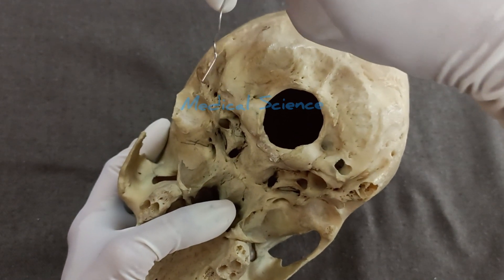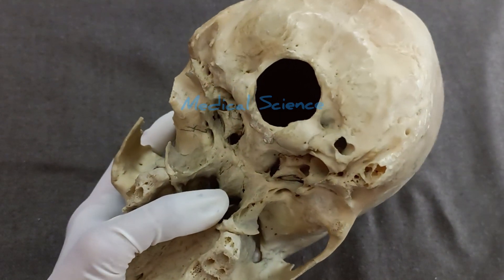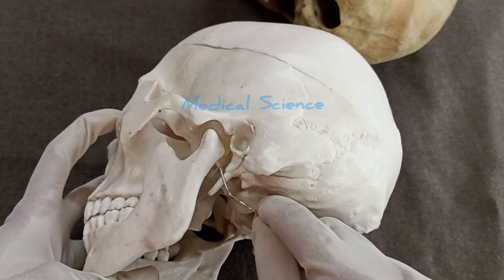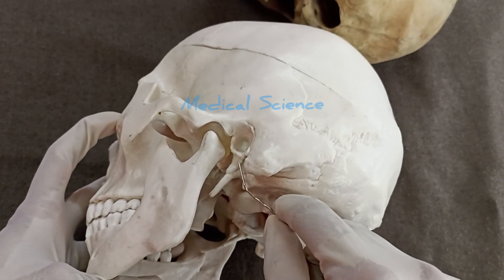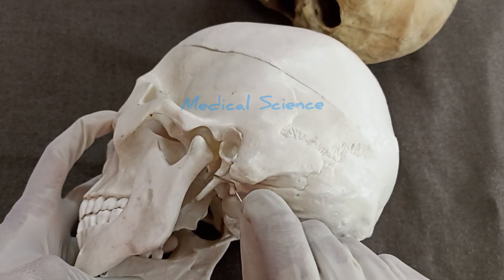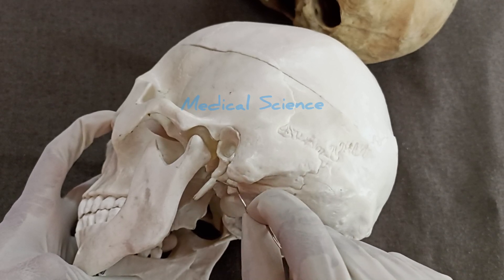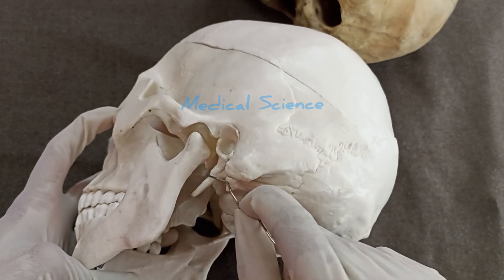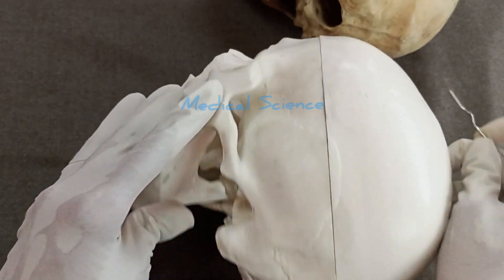Now come to the styloid process. It is a slender projection from the lower aspect of the temporal bone. The projection is directed downward and forward. Its length is around 2.5 cm. This styloid process gives attachment to 2 ligaments and 3 muscles.